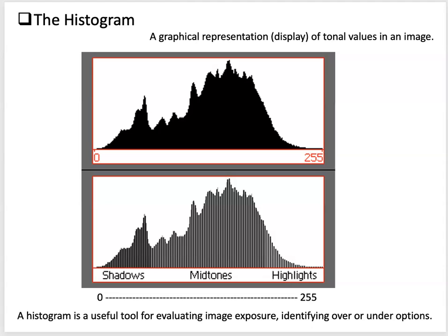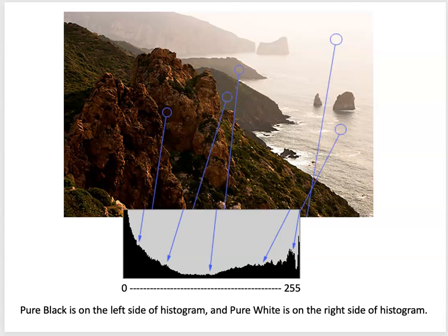We're also going to talk about the histogram. It's a graphical representation or display of the tonal values in your image. You might have seen it in playback on the back of your camera — something that looks like a black mountain with lines. It evaluates the exposure and gives you information about what's happening in the highlights and shadows of your image.